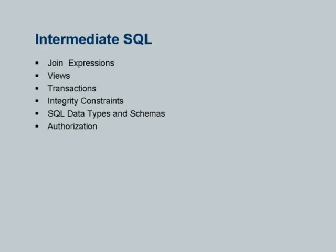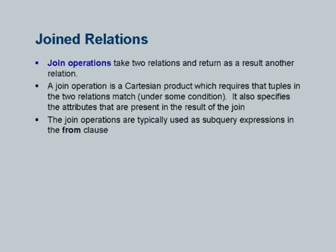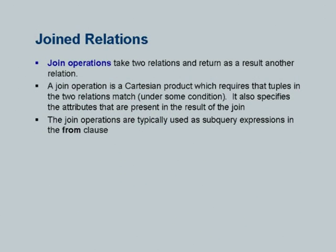This chapter deals with more SQL features. The first topic we will cover is join expressions and outer joins, then views, transactions, integrity constraints, a bit more on data types, and authorization. As you've seen earlier, one of the fundamental operations in databases is taking joins. In original SQL, the only way to do a join is to list all relations in the FROM clause and specify join conditions in the WHERE clause. This works fine for inner joins, but how do you specify an outer join using this syntax?